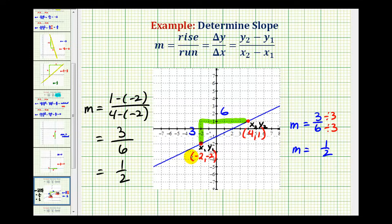So it doesn't matter which technique we use to determine the slope of the line, the slope is one half. We'll take a look at a second example in the next video.